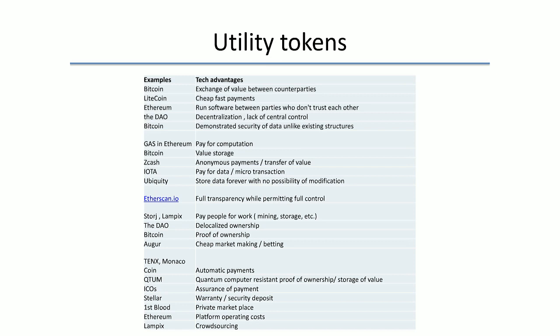The biggest universe right now is utility tokens. You're familiar with Bitcoin — I look at it as exchange or storage of value. Litecoin for payments, Ethereum for a distributed computer. Then you have storage tokens that allow you to pay people for work, the PIX token from Lampix, Augur for market-making and betting, First Blood for a private marketplace, and many others.